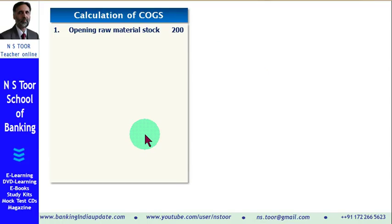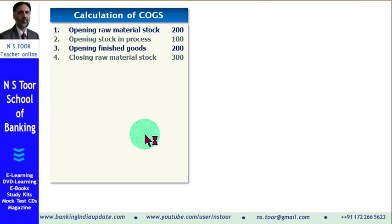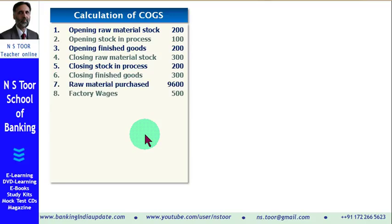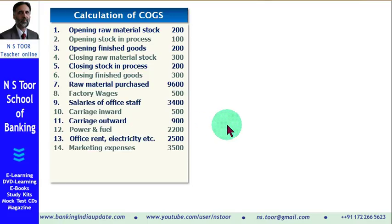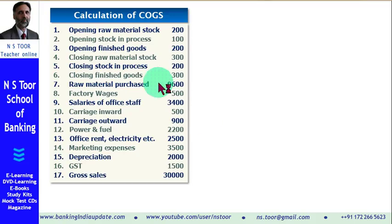We are provided with the value of opening raw material stock, opening stock in process, and opening finished goods stock. We are also provided with closing raw material stock, closing stock in process, and closing finished goods. Additionally, we have certain other expenses: raw material purchased, factory wages, salary of office staff, carriage inward, carriage outward, power and fuel, office rent and electricity, marketing expenses, depreciation, GST (also called indirect tax), and gross sales.